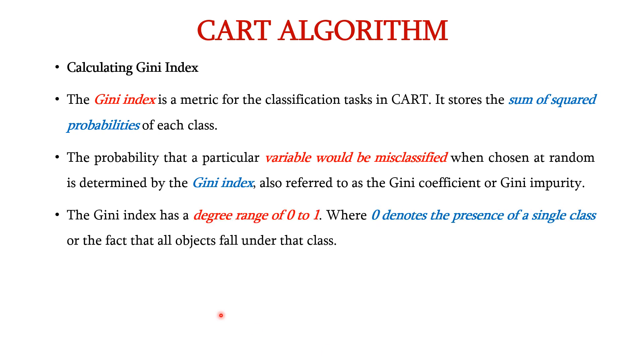It is also known as Gini coefficient or Gini impurity. It has a degree range of 0 to 1. Here, 0 denotes the presence of a single class or the fact that all objects fall under that particular class.